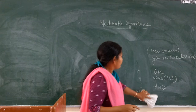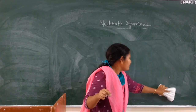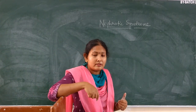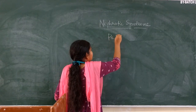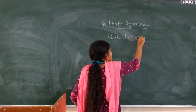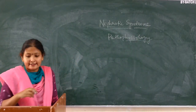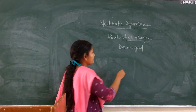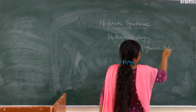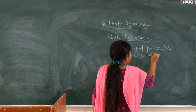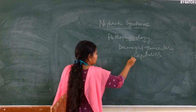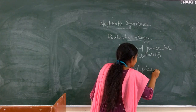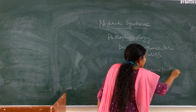Now we will see the pathophysiology — that means the changes which occur in the body as well as in the kidney due to nephrotic syndrome. Damaged glomerulus or glomerular capillaries will cause loss of lots of plasma proteins, which causes proteinuria, as mentioned in the definition.